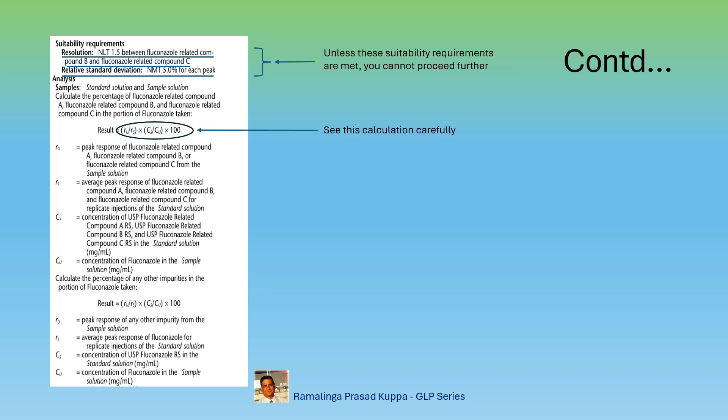If you carefully see the formula for calculation of impurity, the preparation of test solution and standard solutions, they are made at unit concentration, that is mg per ml. If the concentrations are not made in unit concentration, you may have to apply dilution factors for solution preparation.